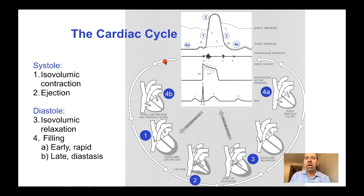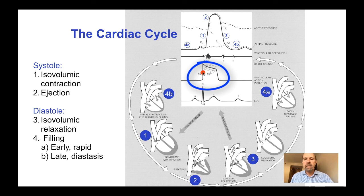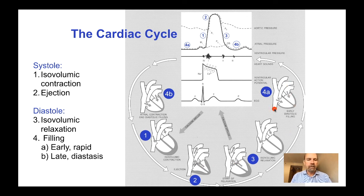Finally in the later phase of diastole the atria contract to give a little extra kick to the filling of the ventricles — this phase is known as diastasis. Also in this diagram are the heart sounds corresponding to the valve opening and closure events, the action potential showing the depolarization corresponding to the QRS complex of the electrocardiogram, and the repolarization corresponding to the T-wave. The onset of systole — the onset of isovolumic contraction — is shortly after the peak of the QRS complex. So the four phases are isovolumic contraction, ejection, isovolumic relaxation, and filling, which consists of early filling and late filling or diastasis.